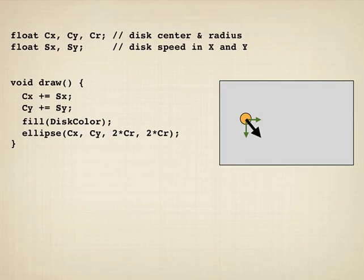In draw, we add SX and SY to CX and CY respectively, moving the ball horizontally and vertically. We fill and we draw an ellipse. In this version of draw, I'm not drawing the background every frame so the ball would leave a trail. If we didn't want the trail, we would just stick in a call to background at the top of draw.